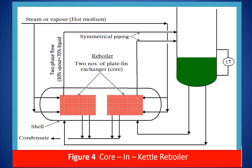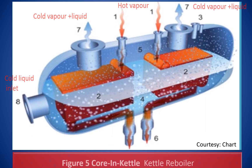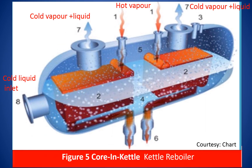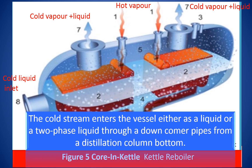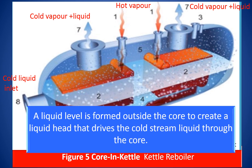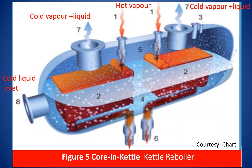Inside the heat exchangers, the warm stream cools as it flows against the core stream from the column. The core stream enters the vessel either as a liquid or a two-phase liquid through a downcomer pipe coming from the distillation column bottom. The liquid level is formed outside the core to create a liquid head that drives the cold stream of liquid through the core. The cooled or condensed warm stream, which is steam, leaves the core and shell as condensate. The cold stream vapor along with unvaporized liquid leaves the vessel through the outlet nozzles to the column bottom, where the liquid is separated and the vapor moves up the column.